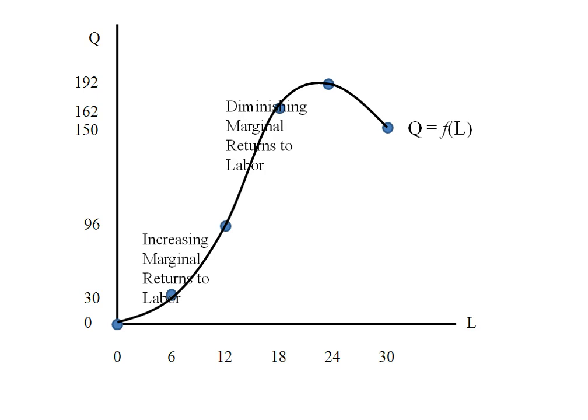Then for a while we've got diminishing marginal returns so I'm still sloping up but I'm starting to flatten out. Then there's a range where output is decreasing as I use more labor and we call that diminishing total returns to labor.